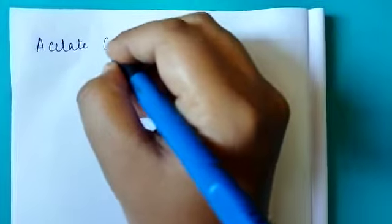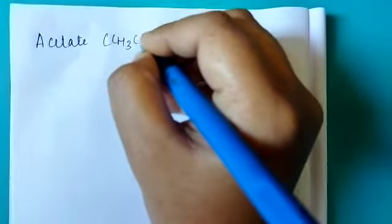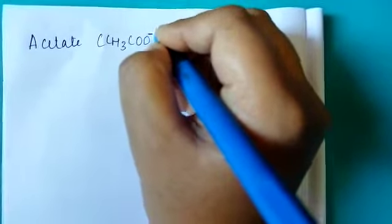Good morning students, now we will see the equations involved in the analysis of acetate anion which is represented by the formula CH3COO-.